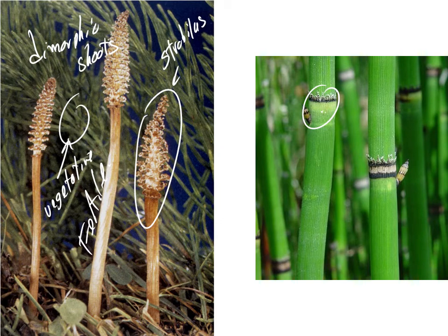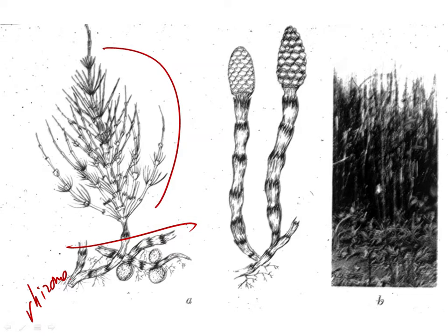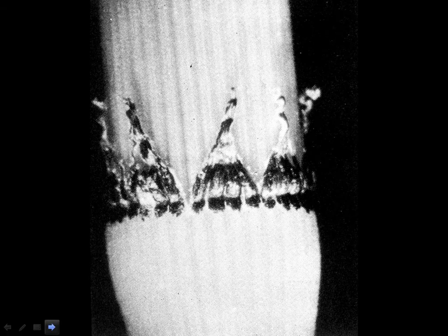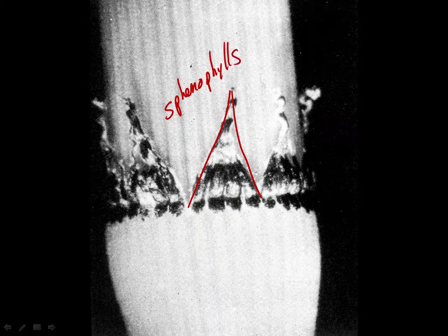The structure of the strobilus is really what sets these plants apart. The vegetative body is also very unique. We can see the rhizome and the above-ground part of the plant with whorled leaves, and the strobilus at the top. Here we have the leaves. Look at the shape — it's wedge-shaped. That's what gave it the name Sphenophyta. They're called wedge-shaped leaves, or sphenophylls.